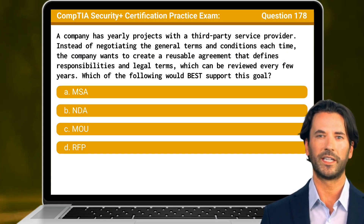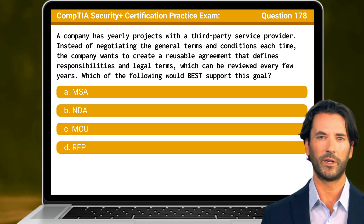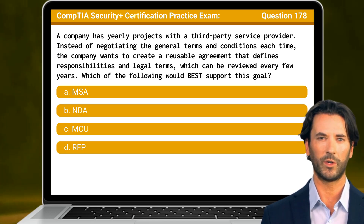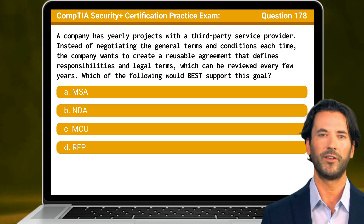Question 178. A company has yearly projects with a third-party service provider. Instead of negotiating the general terms and conditions each time, the company wants to create a reusable agreement that defines responsibilities and legal terms, which can be reviewed every few years. Which of the following would best support this goal?